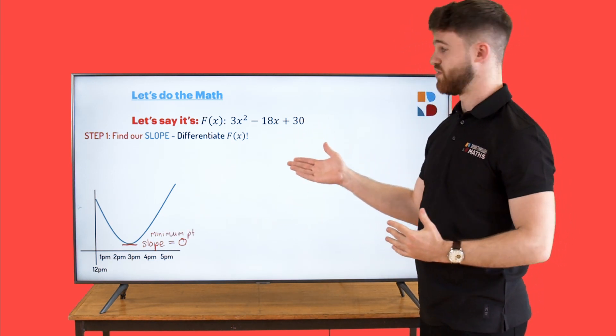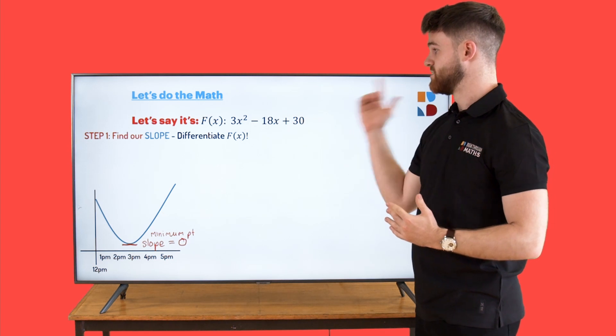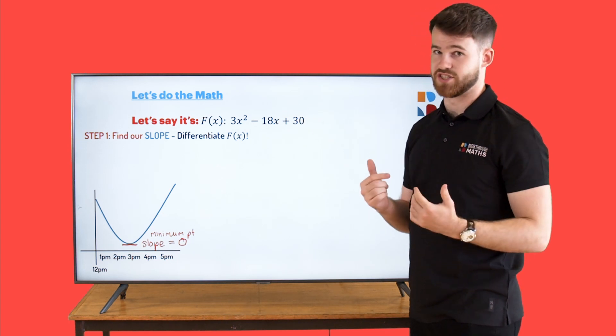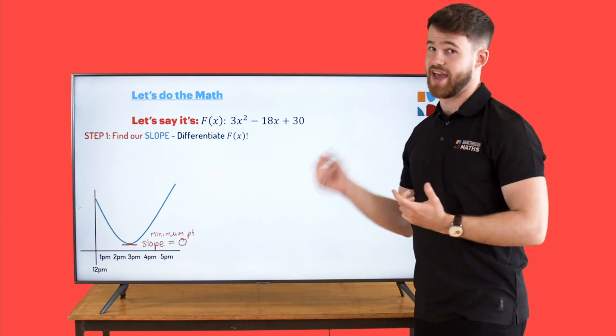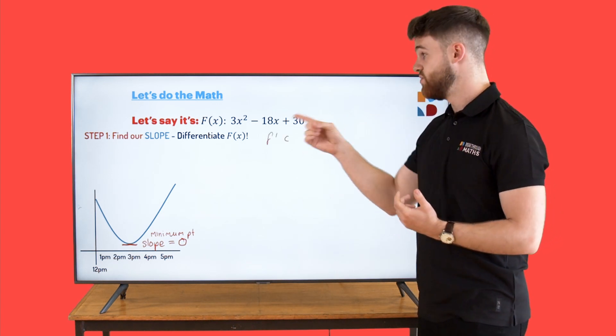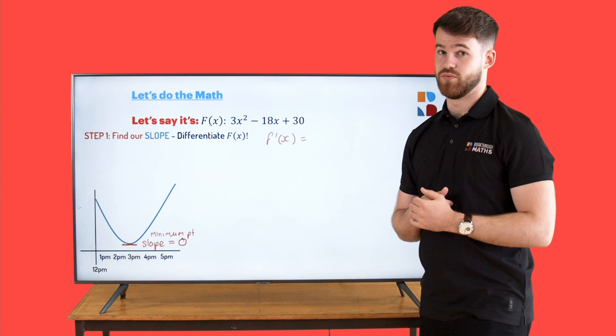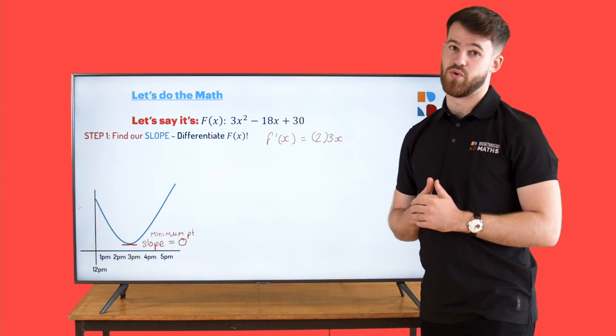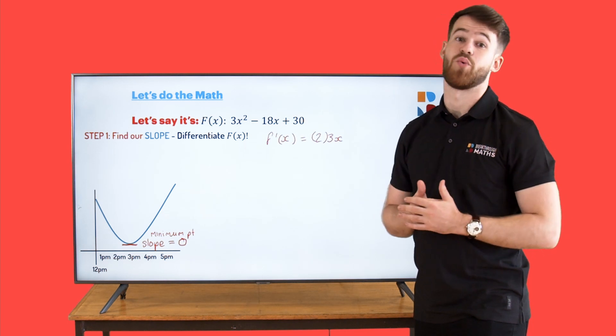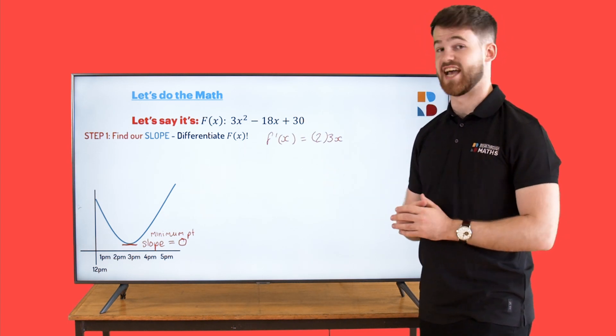So our function for GameStop's price is f(x) = 3x² - 18x + 30. If we differentiate that, we get f'(x) and then 2 multiplied by 3 will give us 6x and then drop the power by 1 so it's no longer squared, it's just 1. 6x.